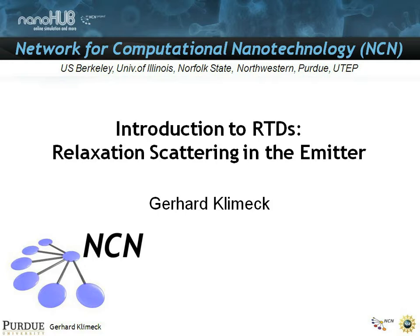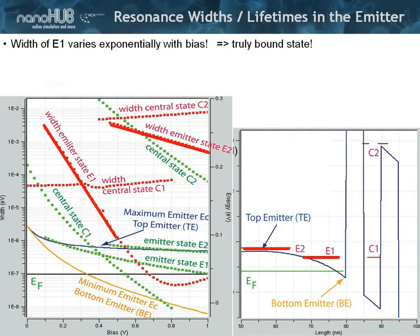The next topic is RTDs with relaxation scattering in the emitter. In the previous section, we've seen that the emitter bound states are very important for the injection of current. But there was something quite missing in that treatment. What we've seen here, and I'm flashing this on the screen, is that the emitter bound state E1 is changing on the logarithmic scale as a function of bias. It becomes extremely narrow.